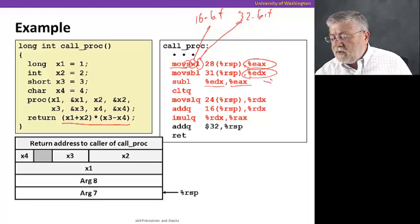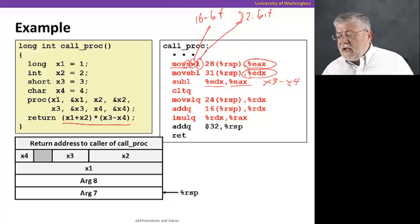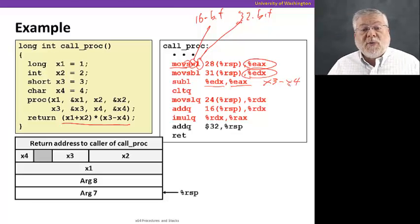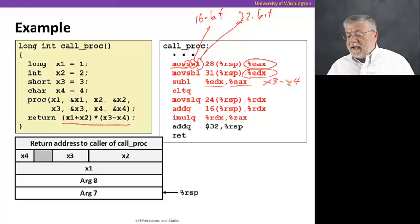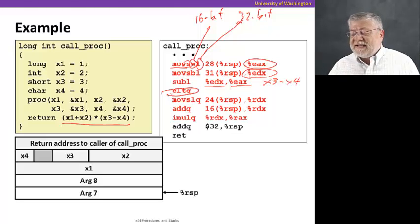That's a 32-bit quantity. We're gonna have to multiply it with some 64-bit quantity. So we're gonna do some more sign extension using the CLTQ instruction. That sign extends the 32-bit EAX register to 64 bits.